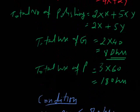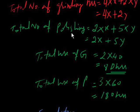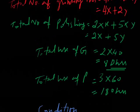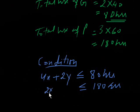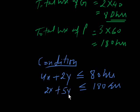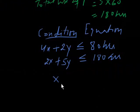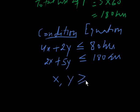The next constraint is for polishing time: 2X plus 5Y must be less than or equal to 180 hours. Additionally, model 1 and model 2 quantities — X and Y — must be greater than or equal to 0, as they are non-negative.